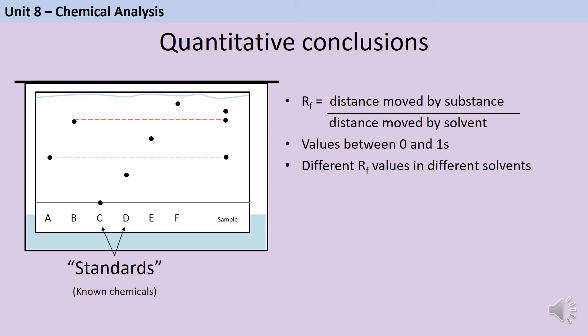So the idea of an RF value is it's a number that tells you how soluble was a particular substance. And it's actually a fraction where the distance that the substance traveled is divided by the distance that the solvent traveled. So obviously the distance that the solvent has traveled is the maximum distance that the substance could travel because our colored ink isn't going to suddenly jump ahead of the solvent. It's being carried by the solvent.